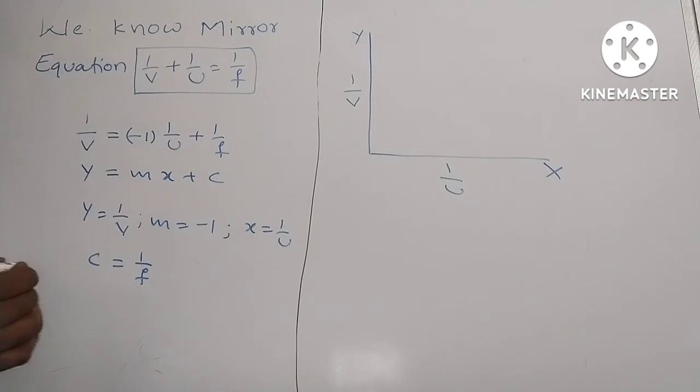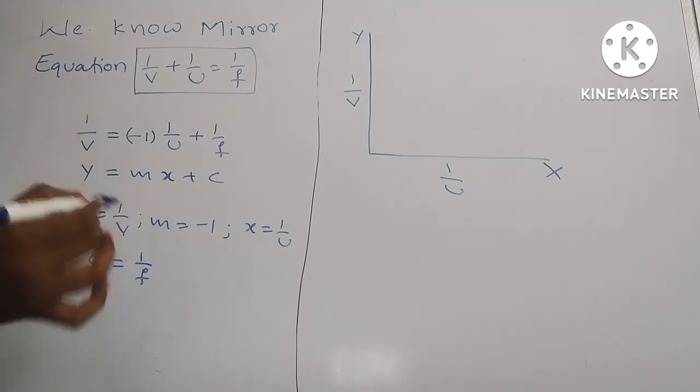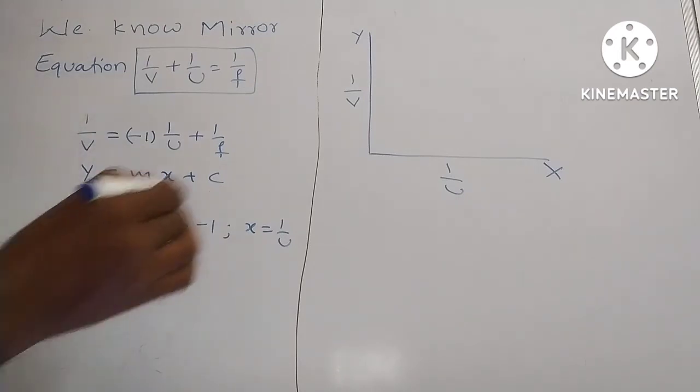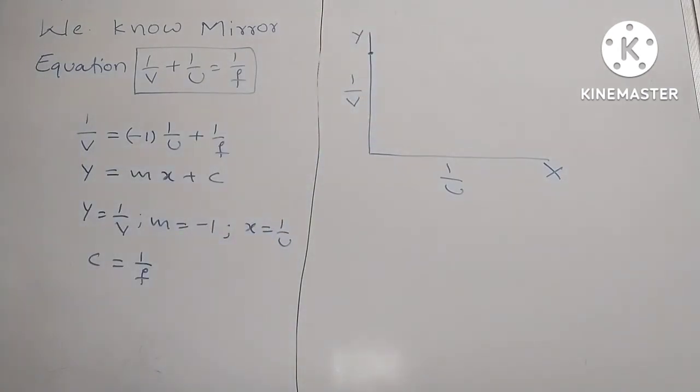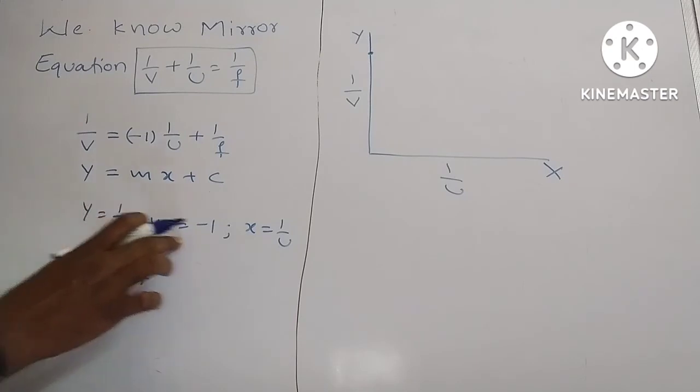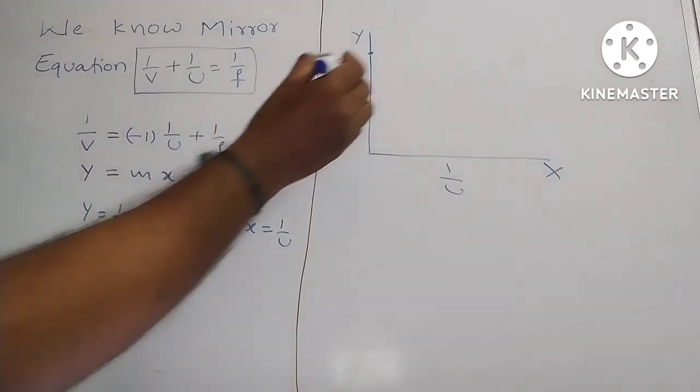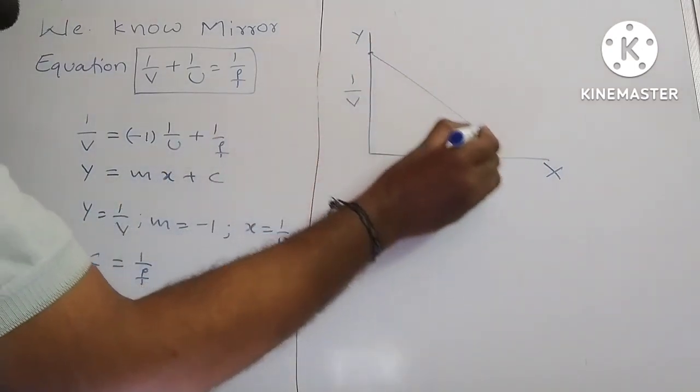So if you see here, c represents 1 by f, that is the intersecting point on y axis. And if you observe slope, this is the negative slope, you will get graph like this.